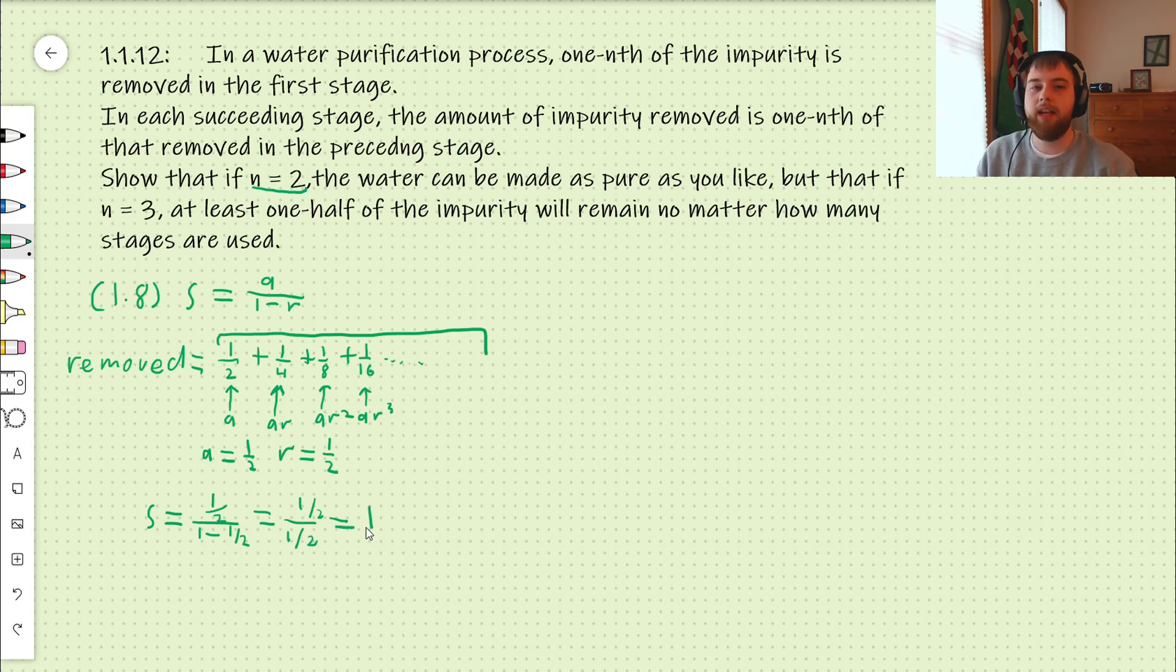So, if you take an infinite number of stages to remove the impurity, you will end up...and remember that s is...our sum is the amount removed. You will be able to remove all of the impurity, which is what this 1 is.